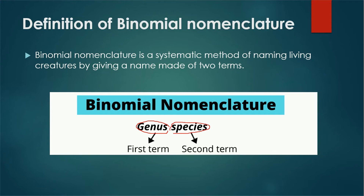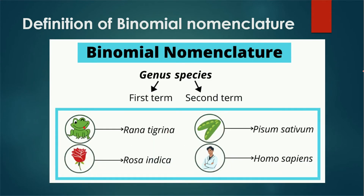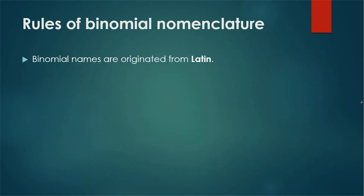Here are some examples using the binomial nomenclature system: Rana tigrina for the frog, Rosa indica for the rose, Pisum sativum for the pea plant, and Homo sapiens for humans. The first name is the genus and the second name is the species name.